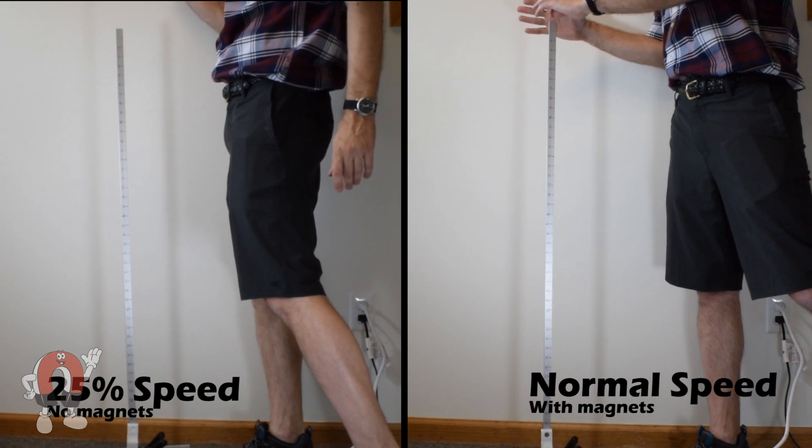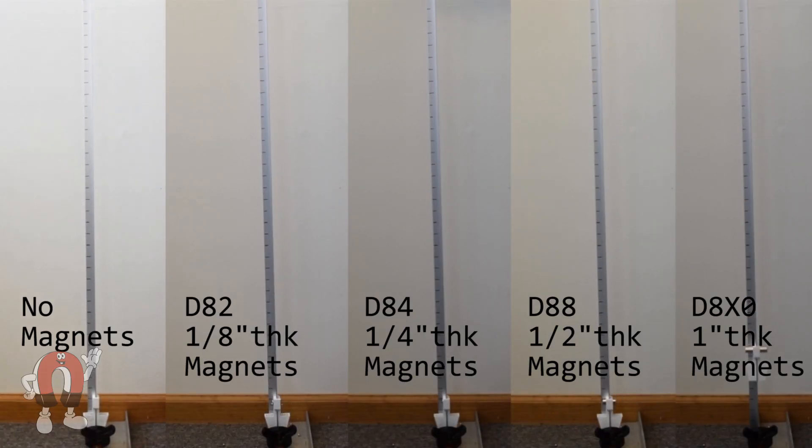Stack all the tests together, and the bigger magnets clearly fall slower.